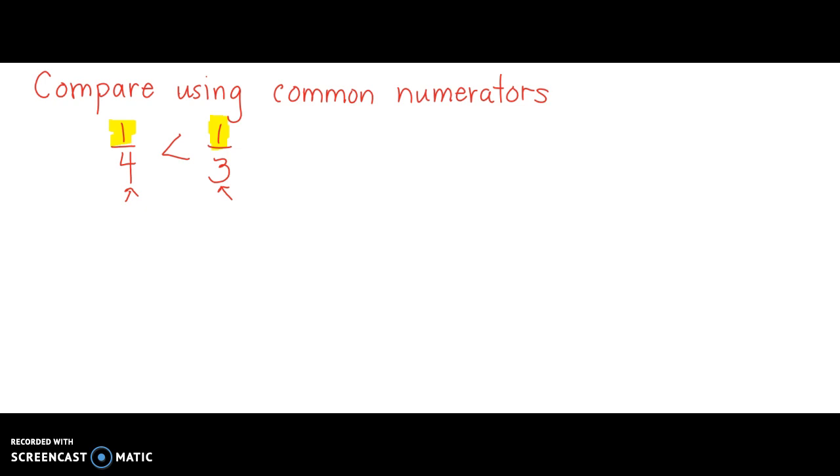But what about an example like 2/3 and 4/7? These don't have the same numerators, and so it's not as easy. But we know we can use equivalent fractions to create an equivalent fraction that has the same numerator if we'd like.